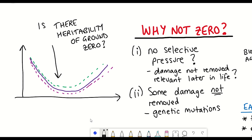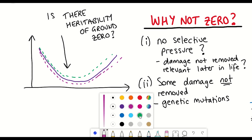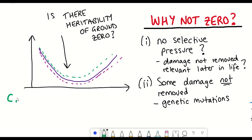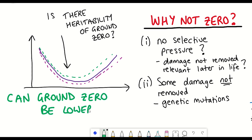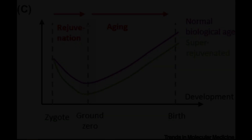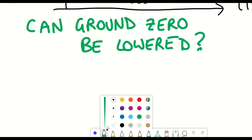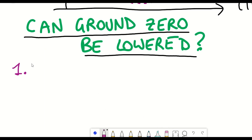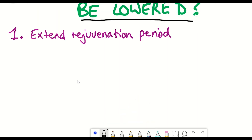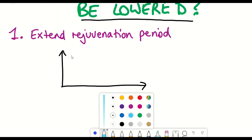Given this information, it raises the question: can ground zero be lowered? The idea is that with a lower ground zero, there could be a reduced biological age throughout life, leading to an extended lifespan and health span. The article discusses two main ideas to achieve this. The first is extending the early rejuvenation process to reach a lower ground zero.